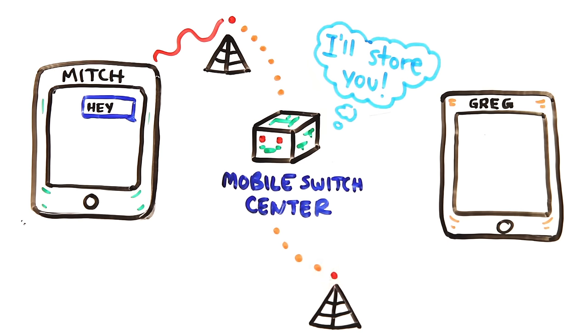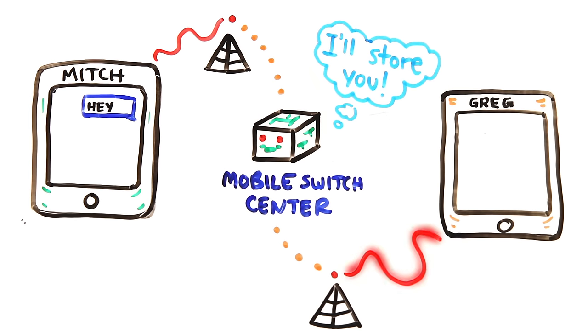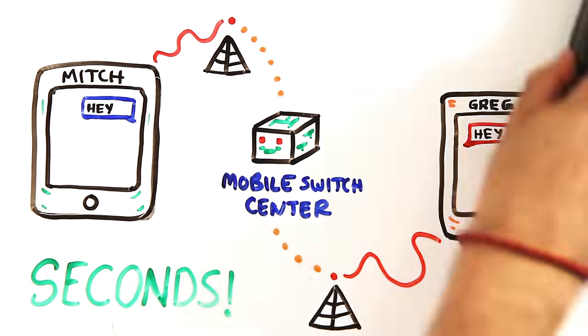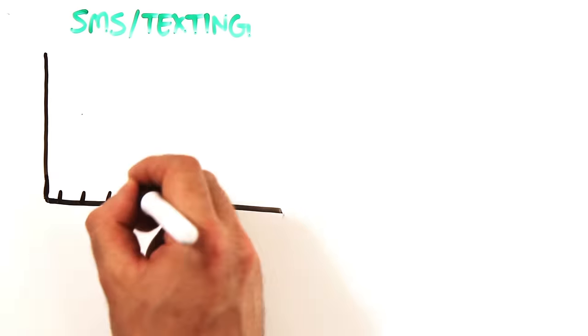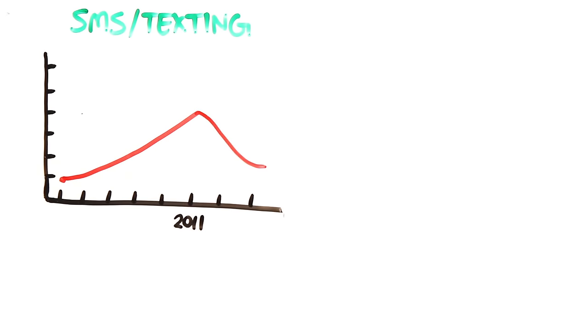Once at the tower nearest you, it's converted back to a radio signal that can be picked up by the antenna in your phone. This all happens in seconds. Interestingly, traditional SMS text traffic actually peaked in 2011.